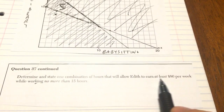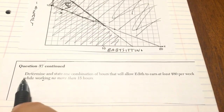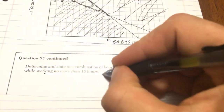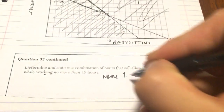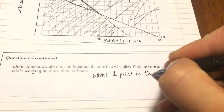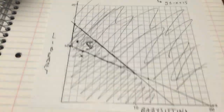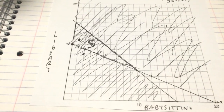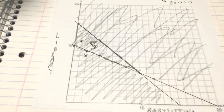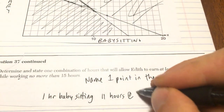Determine and state one combination of hours that will allow Edith to earn at least $80 per week while working no more than 15 hours. This is basically saying, name one point in the solution set. A point in the solution set satisfies both inequalities. I'm going to pick this one right here — that is one hour babysitting and 11 hours at the library.